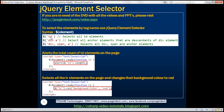The first example returns all TD elements by passing the TD tag name within quotes to the $ function. The second example selects all anchor elements that are descendants of a div element — any anchor nested inside a div, no matter how deep. The third example returns all div, span, and anchor elements.